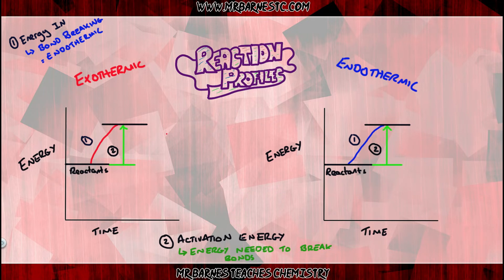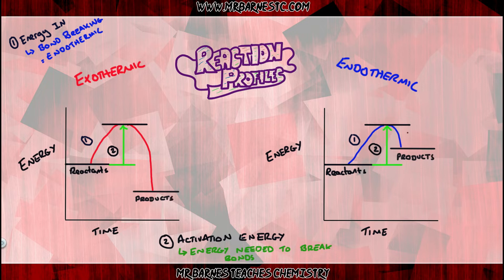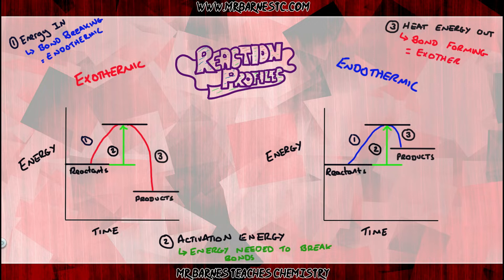Now for the differences between the two reaction profiles. Although both have products on the right-hand side, and in both of them heat energy is given out — which is the exothermic part, the bond-forming part — the height of the products line is different.